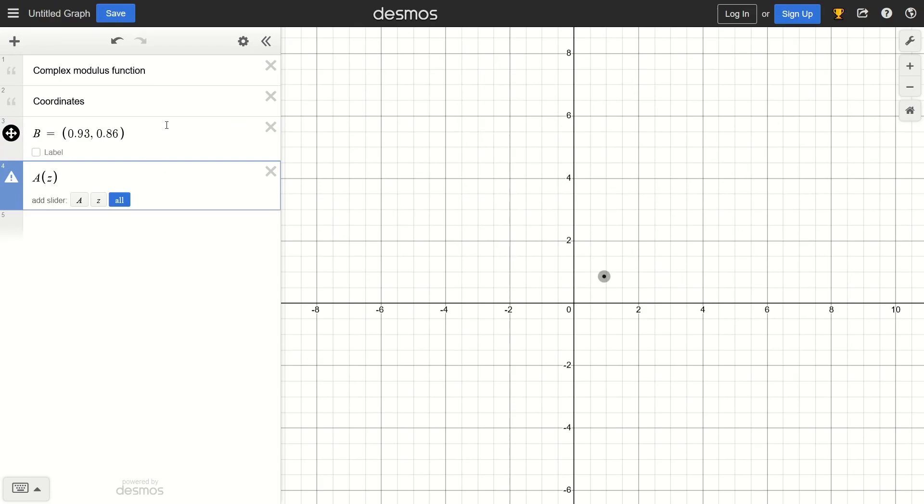So now we define the complex modulus function. Now this is basically the modulus of a complex number, it would be the square root of the real part squared plus the imaginary part squared. So if I write it like this: real part squared plus the imaginary part squared.